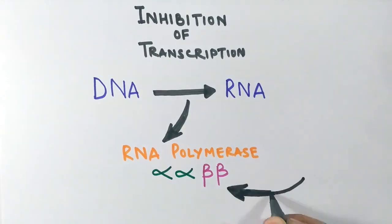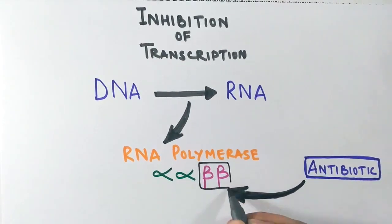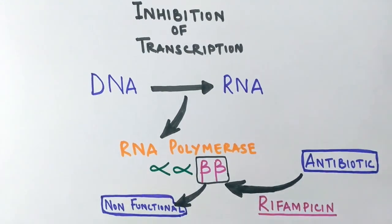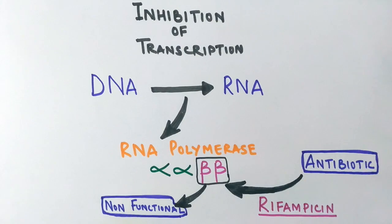In this case, the antibiotics inactivate the beta subunits and render the enzyme non-functional. So in this way transcription is halted by antibiotics. Rifampicin is one of the mostly used antibiotics that have the ability to halt the transcription in bacteria. This antibiotic rifampicin mostly targets mycobacterium and staphylococcus aureus.